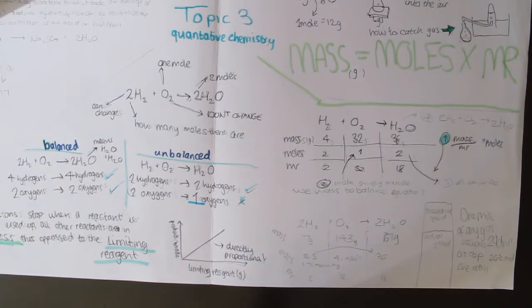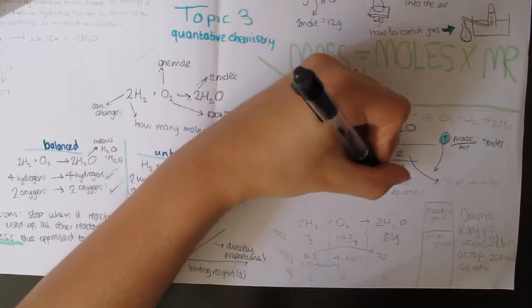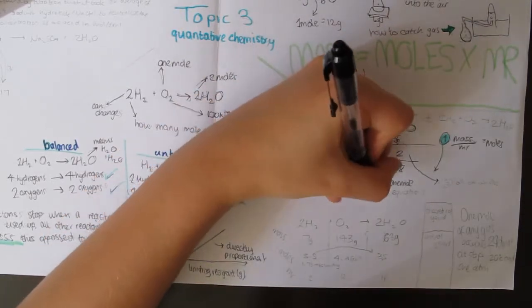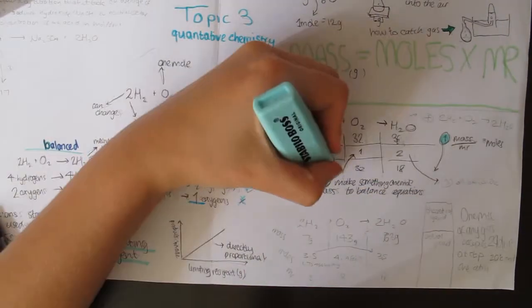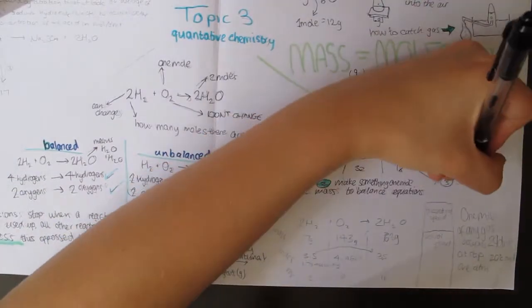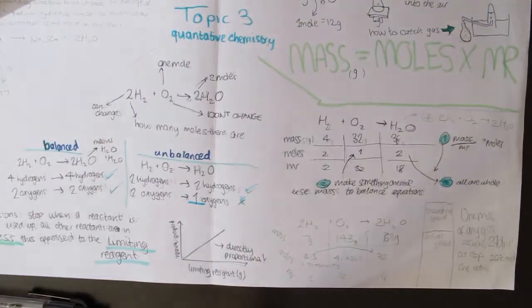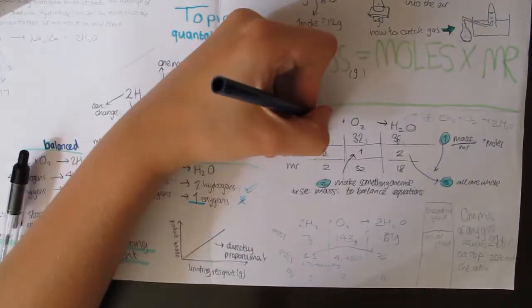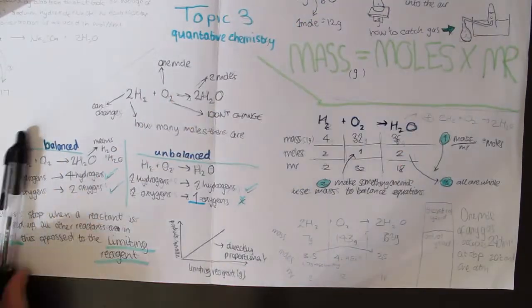This can be used to find out from how much reactants you have, how much product will eventually be made. This is also shown in a table here, where you write out the balanced equation at the top, and find the MR for each substance. Then find out the moles for what you can, and because all substances with the same large number have the same number of moles, their masses can be known too.